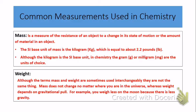Let's look at mass now. Mass, by definition, is a measure of the resistance of an object to the change in its state of motion, or the amount of material an object has. The SI unit for mass is the kilogram, which we learned in Part 1. Roughly, one kilogram is equal to about 2.2 pounds.